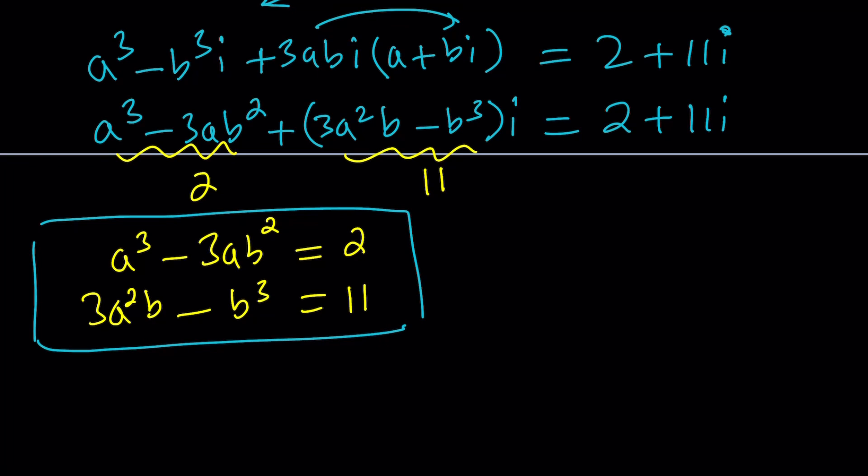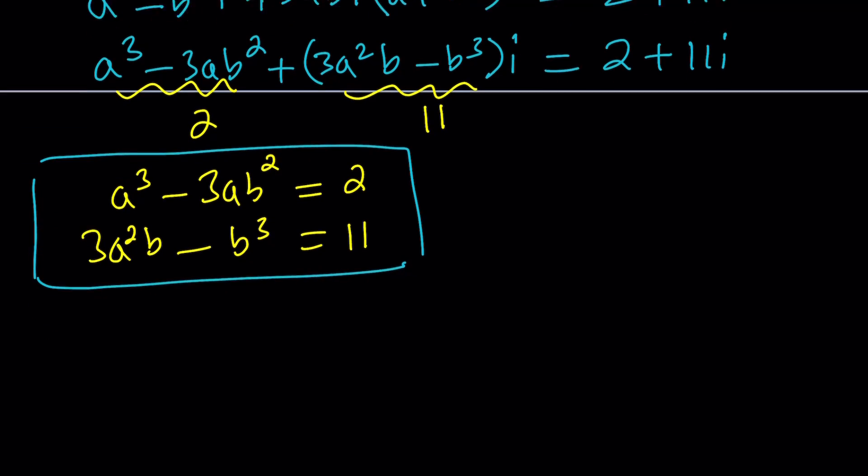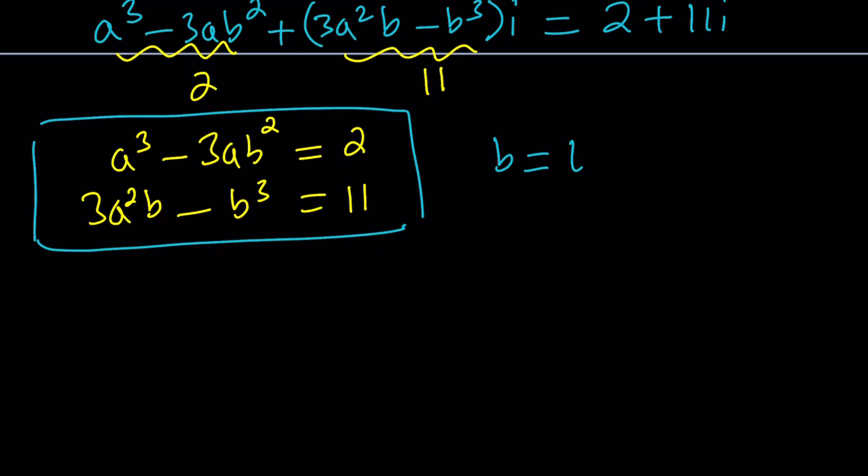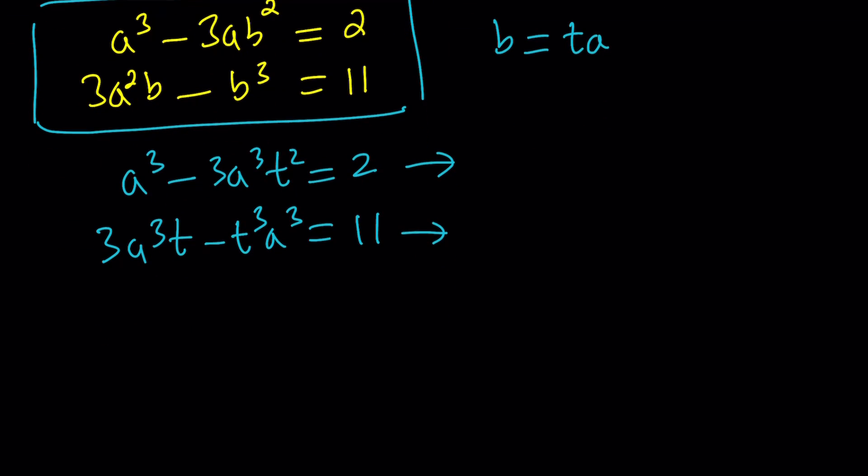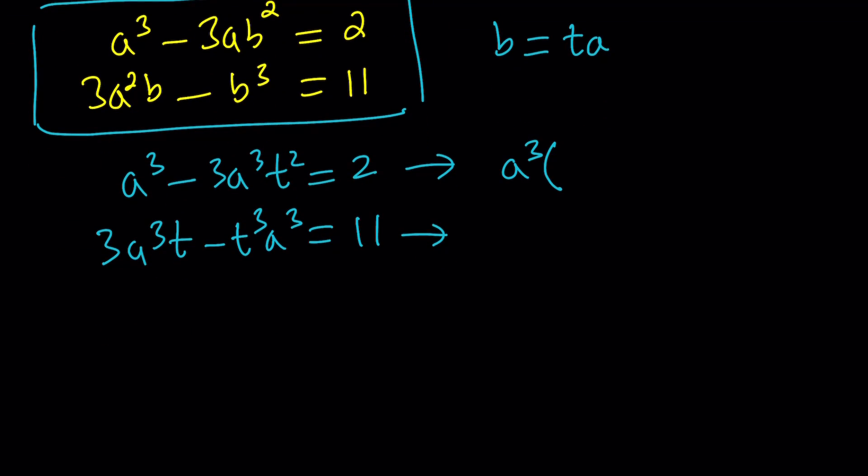Now to be able to solve the system, since it's homogeneous, I'm going to replace B with something like TA. And when I do, I'm going to be getting A cubed minus 3A times T squared A squared. That's going to be 3A cubed T squared equals 2. And at the bottom, I'm going to get 3A cubed T minus T cubed A cubed equals 11. Now our goal is to get rid of the variables, and we can do that by taking out an A cubed here and dividing it by the other equation with the A cubed outside, 3T minus T cubed. And this is going to be 2 over 11, and A cubed is going to cancel out.